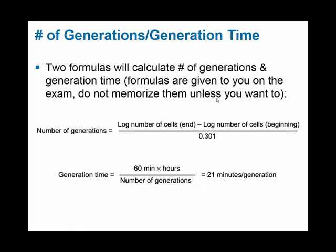To calculate the generation time, you use two formulas. First, calculate the number of generations: take the log of the ending number of cells, subtract the log of the beginning number of cells, and divide that result by 0.301. Then, for generation time, you take 60 minutes per hour times the number of hours, divided by the number of generations — which gives you minutes per generation at the end.